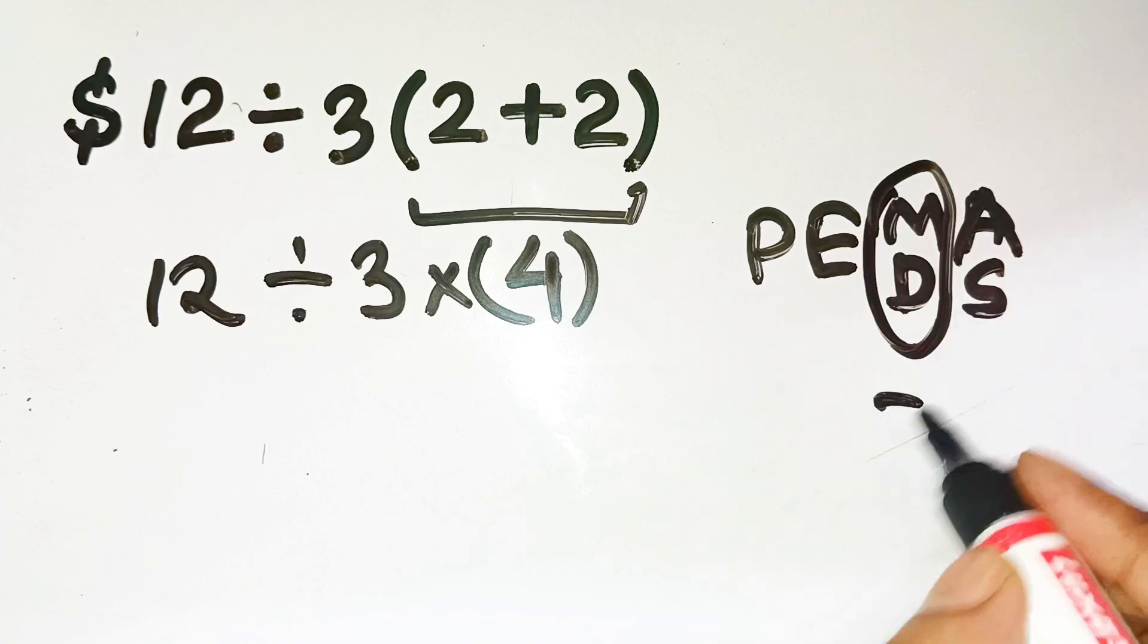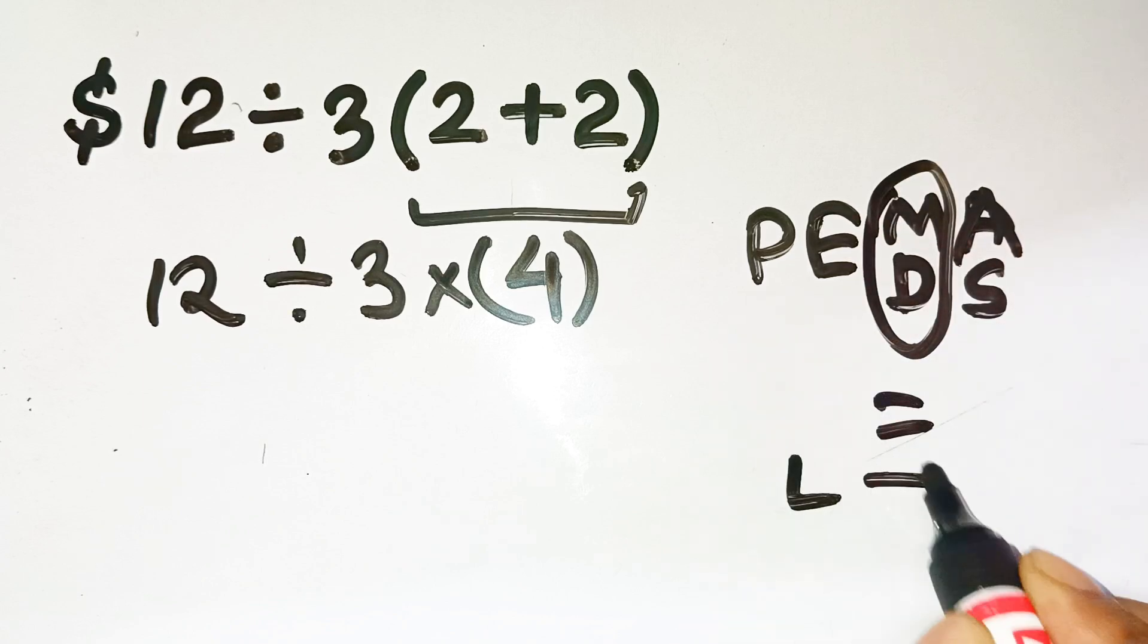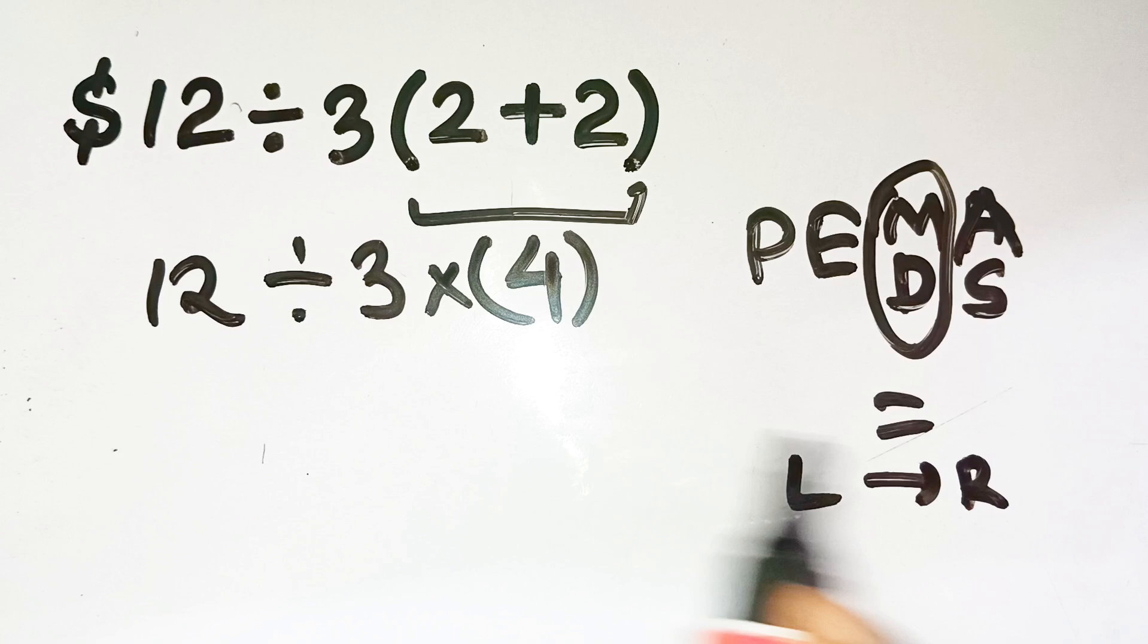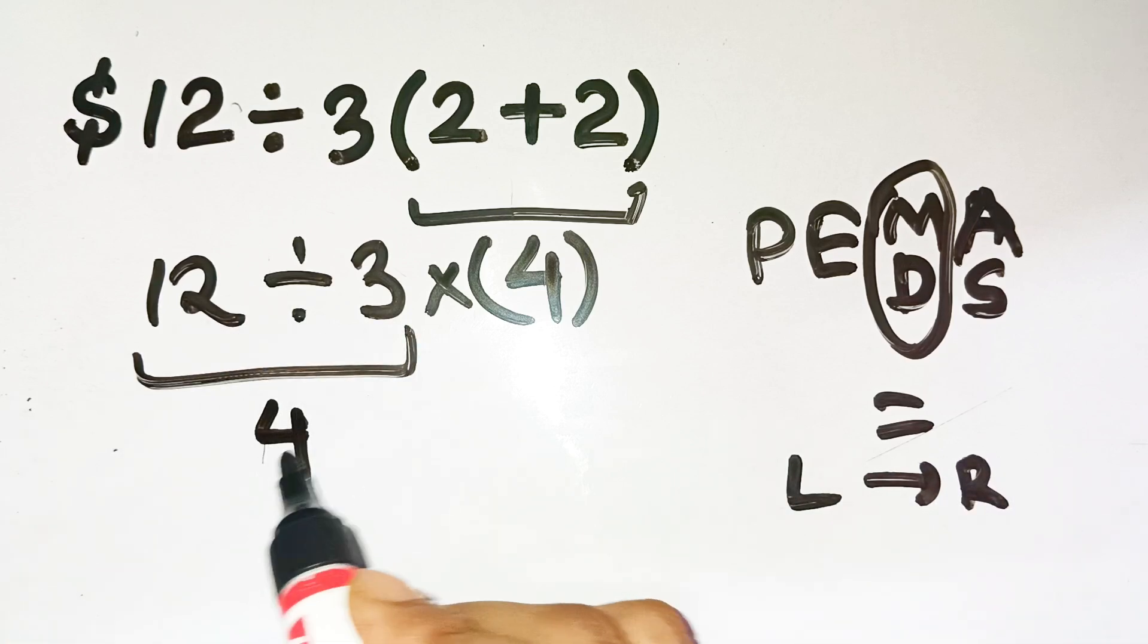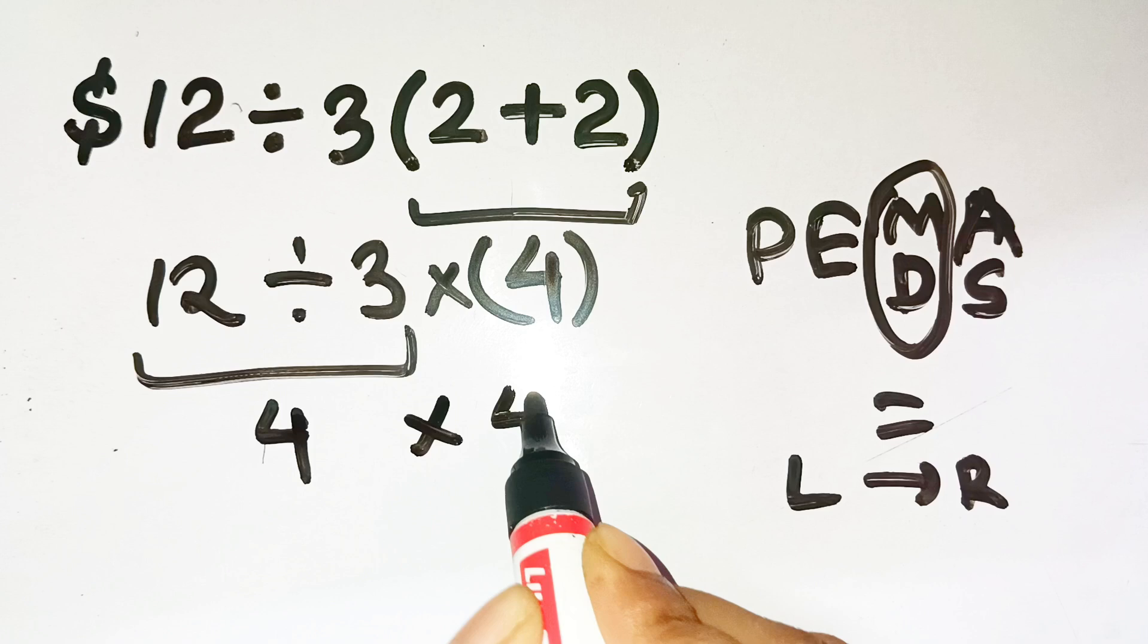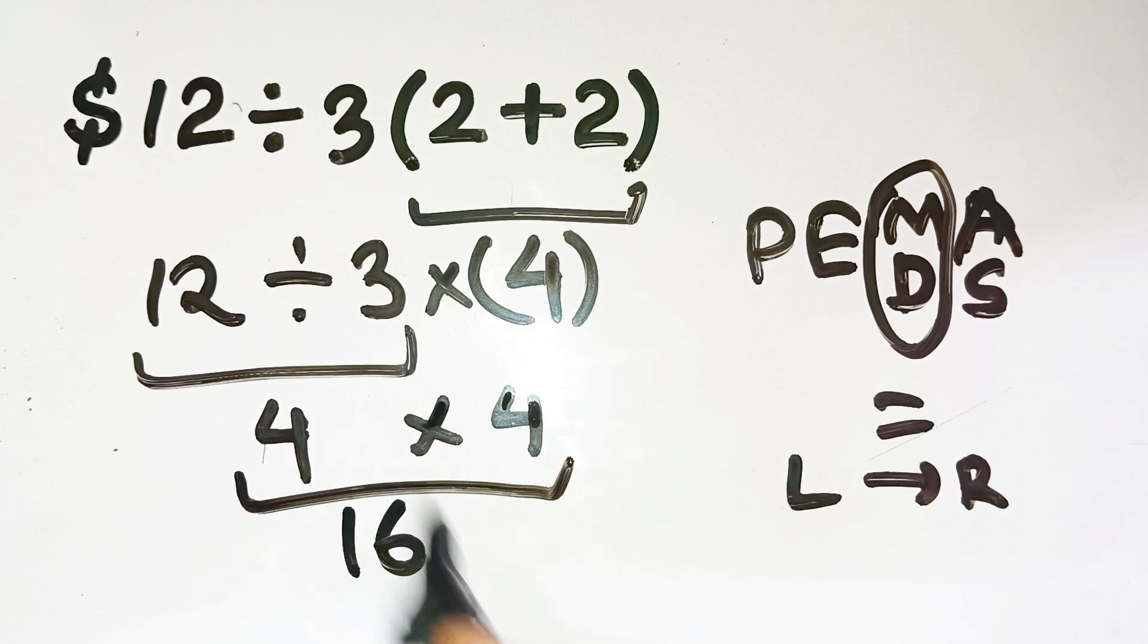Multiplication and division have equal priority, and we solve them from left to right, just like reading a balance sheet. So we go left to right. 12 divided by 3 equals 4. Then we take that result, 4, and multiply by the next 4. And 4 times 4 equals 16. So the correct answer is $16, not $1.